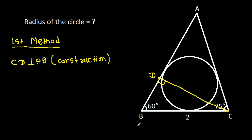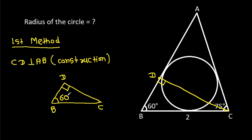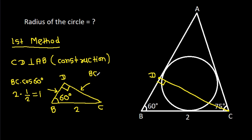In triangle BCD, angle BDC is 90 degrees and angle DBC is 60 degrees, with BC equal to 2. So BD equals BC·cos60° = 2 × (1/2) = 1. And CD equals BC·sin60° = 2 × (√3/2) = √3.